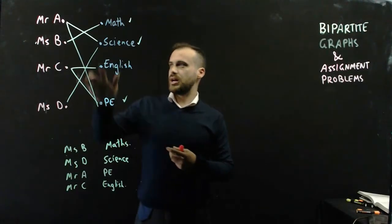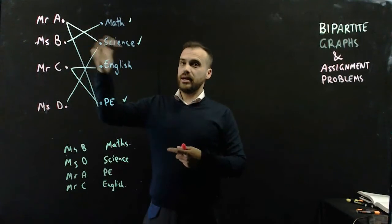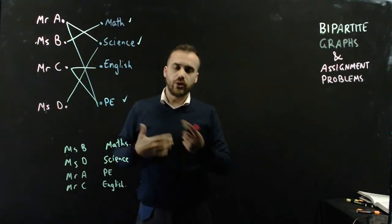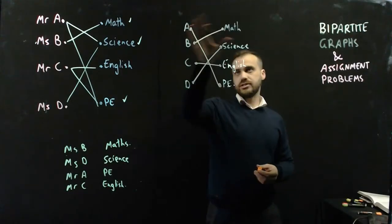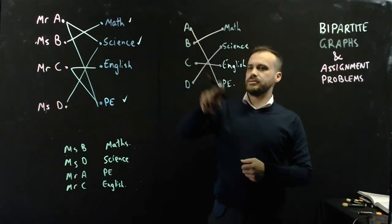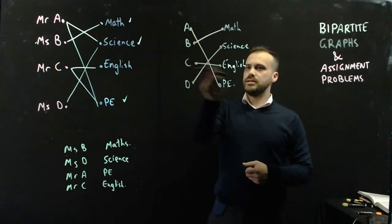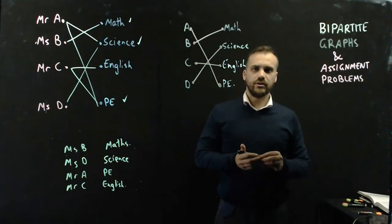The best strategy is to start with the ones with the least options, and then to work your way down and start working with the ones that have the most options at the end. There's just a simplified network without the extra subjects that people can teach. So, you can see A is PE, B is Math, C is English, and D is Science. That's the assignments that we came up with right there.